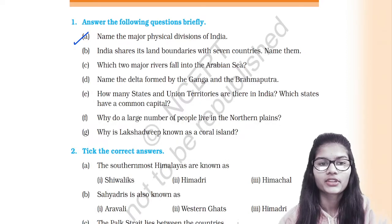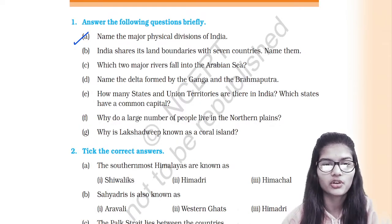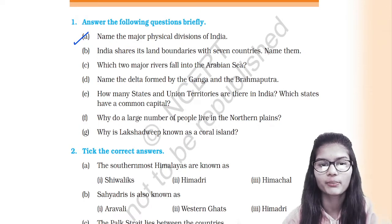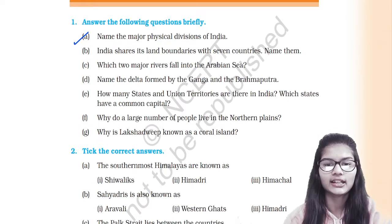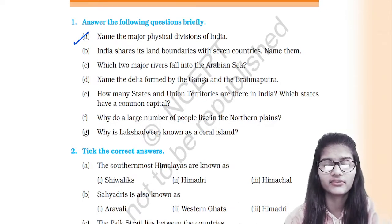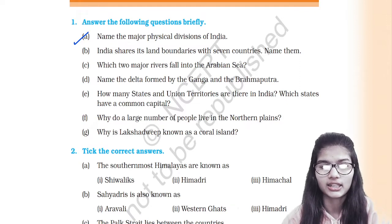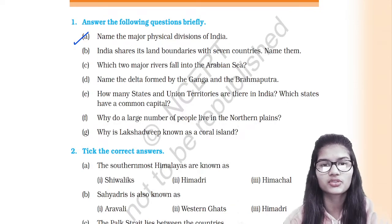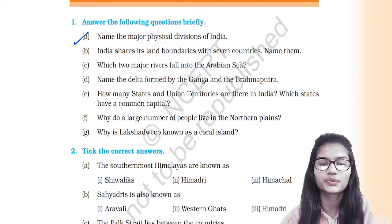The first question is: name the major physical divisions of India. India has five major physical divisions. First is the Himalayas, then the Northern Indian Plains, the Peninsular Plateau, the Coastal Plains, and the Islands. These are the five major physical divisions of India.